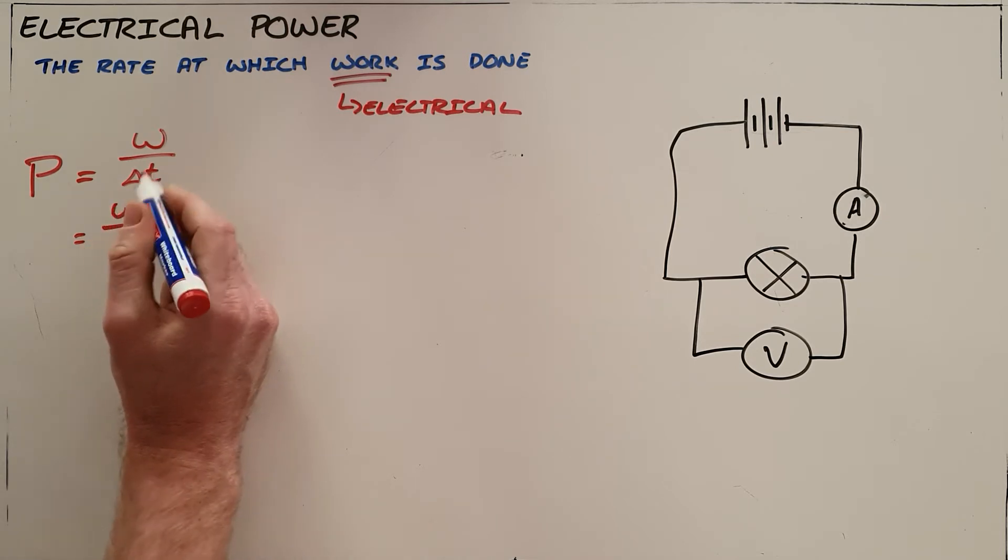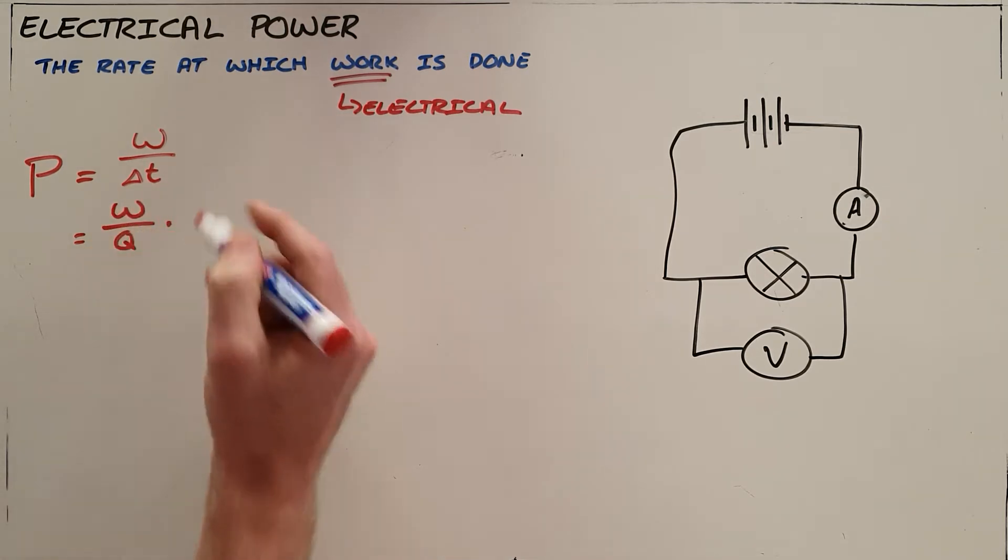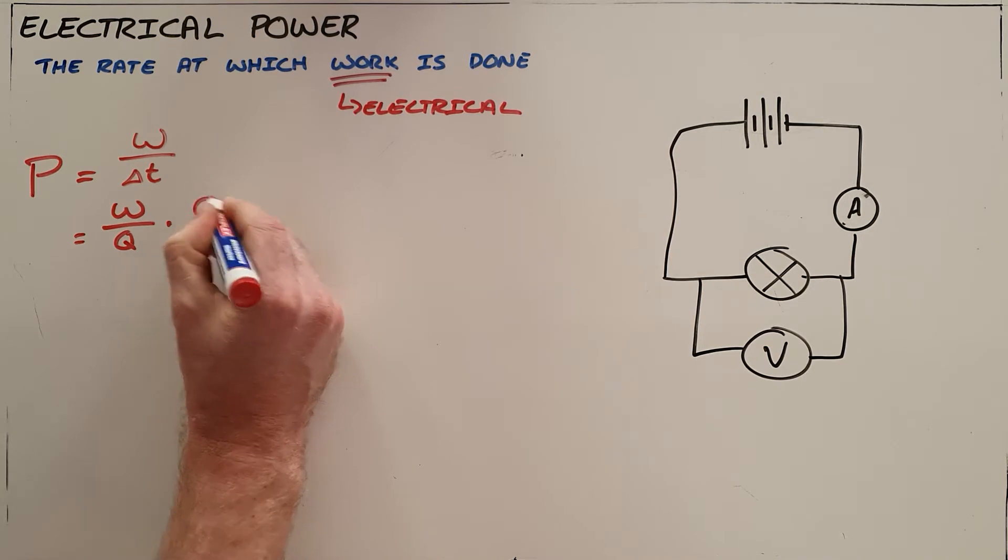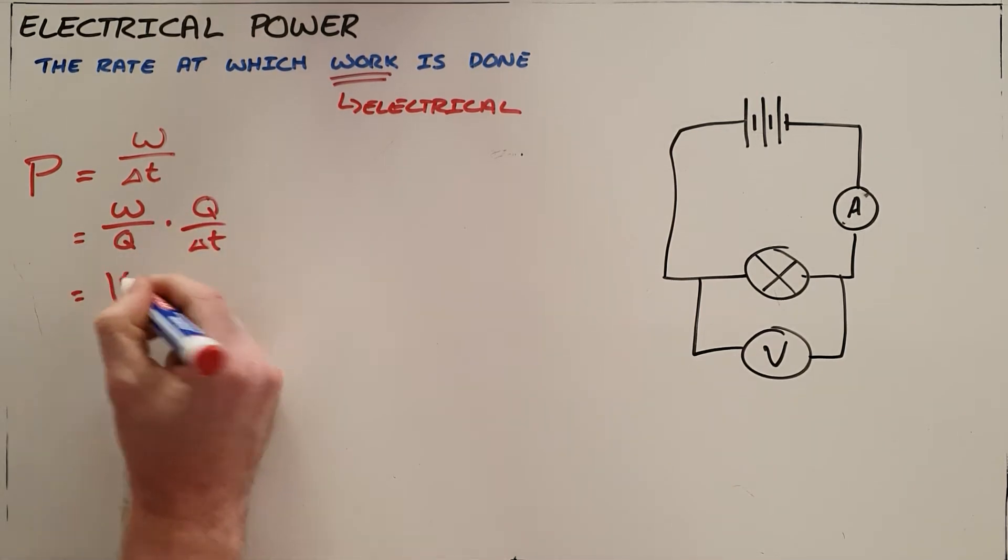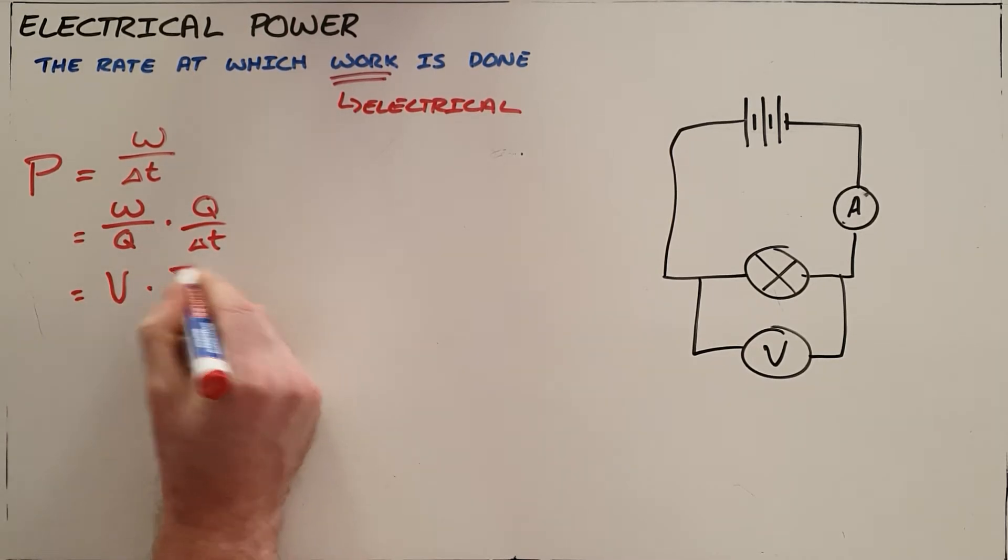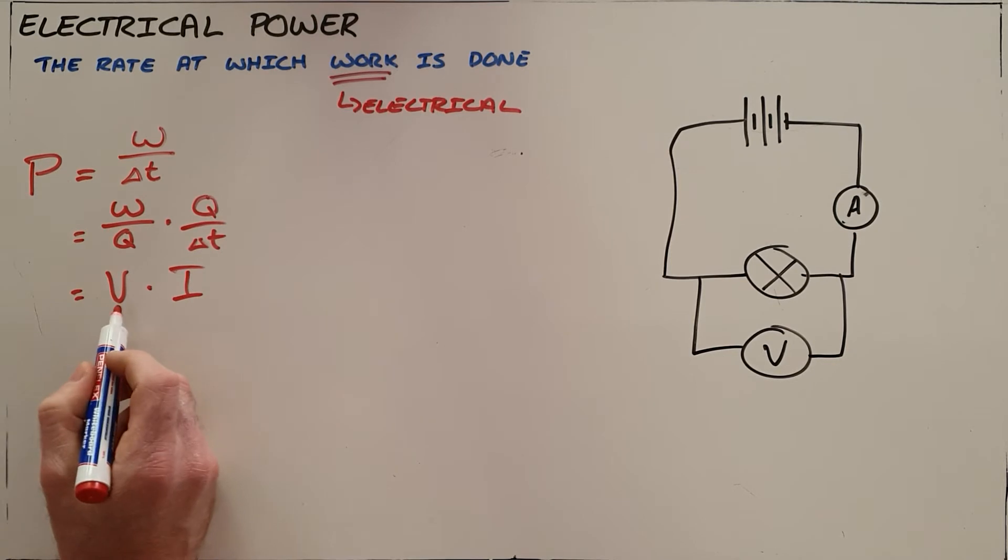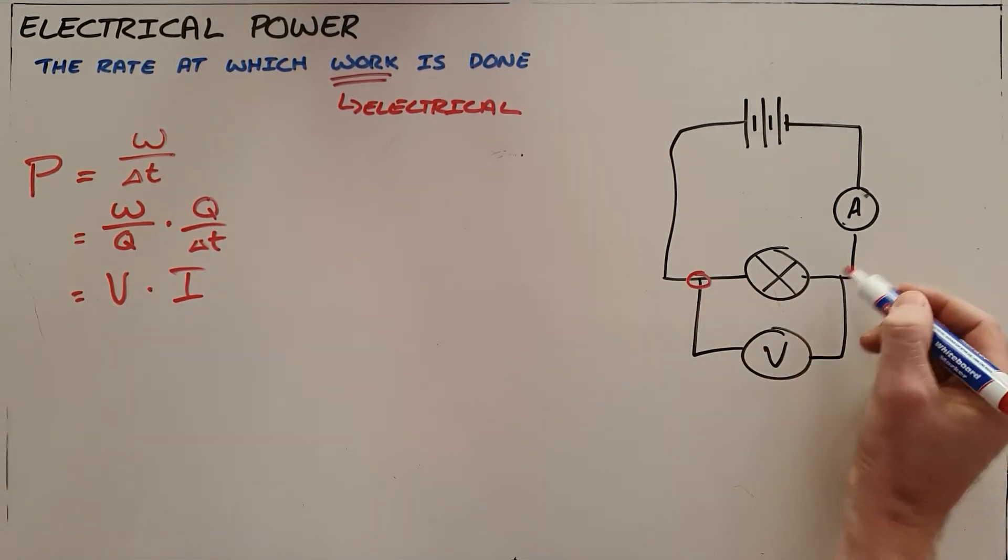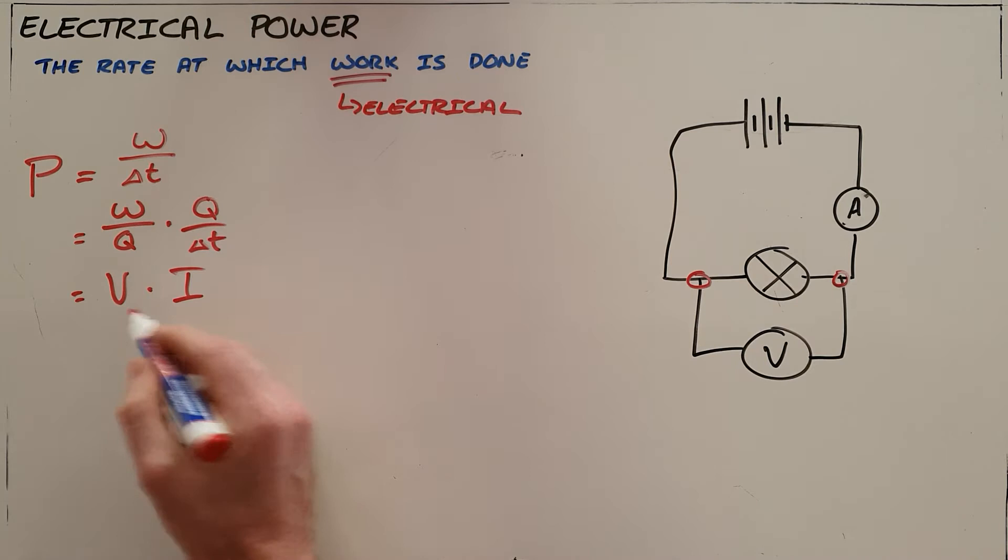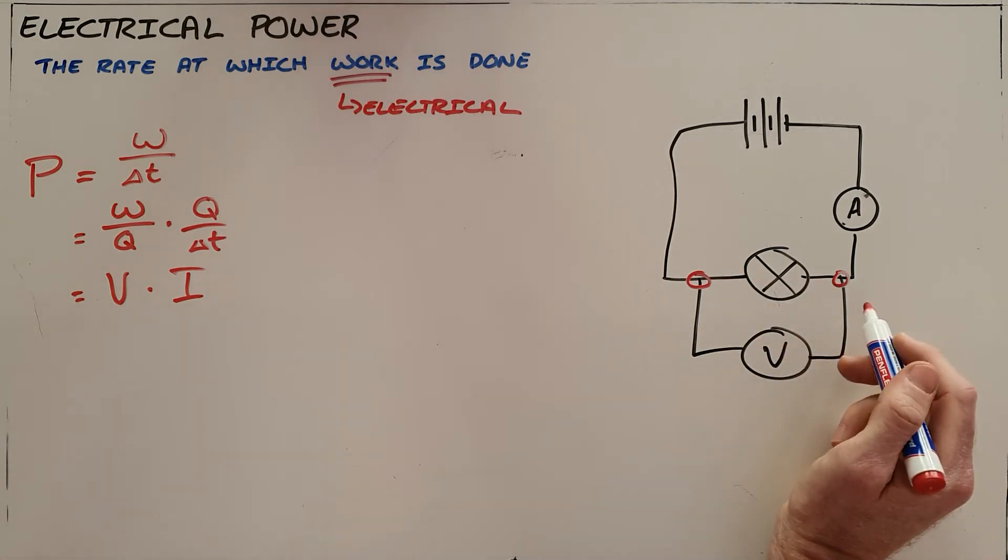We also know that this can be rewritten as power being work over time, which can also be expressed where we know that work over charge and charge over time are two separate terms that we already know: voltage or potential difference, and current. So we can say that power is the product of the voltage across a specific resistor and the current that is passing through that resistor.